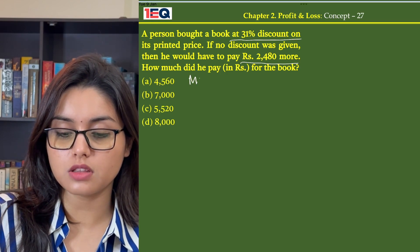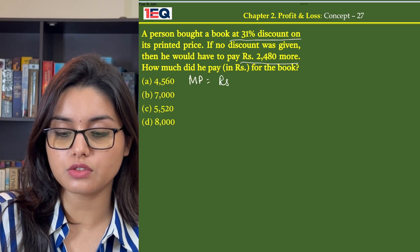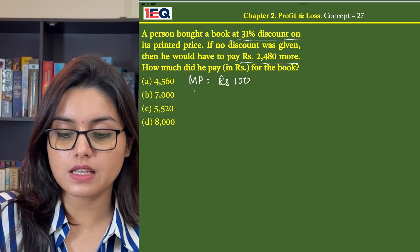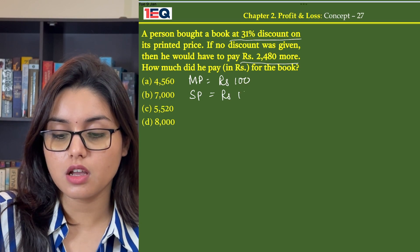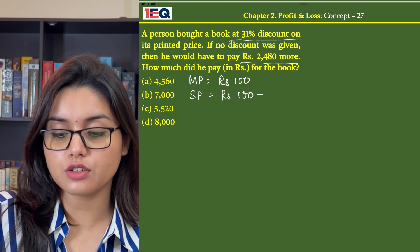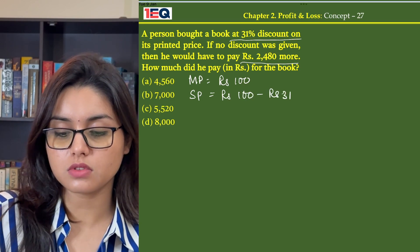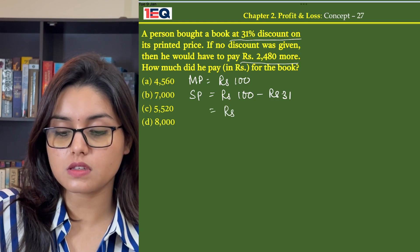So let's assume the marked price when the discount was given is Rs. 100. Then the selling price after deducting discount would be Rs. 100 minus 31% of 100, that is Rs. 31, which comes down to Rs. 69.